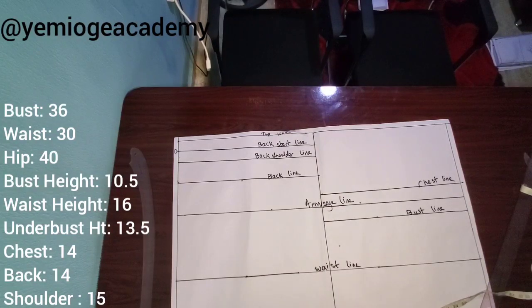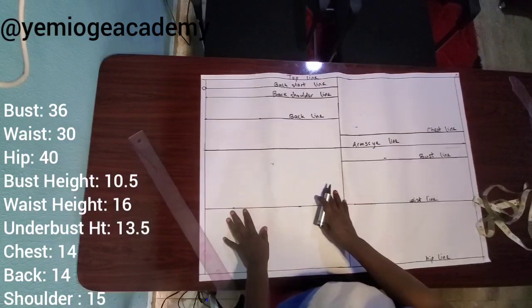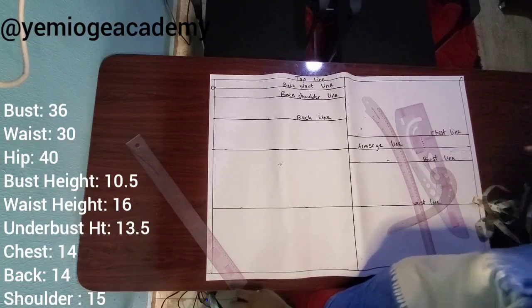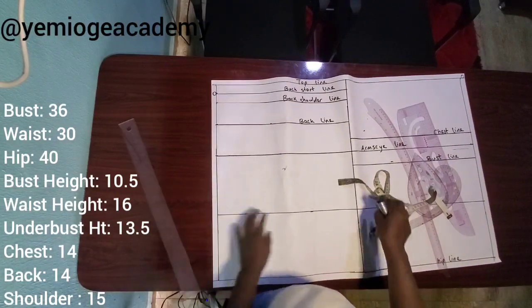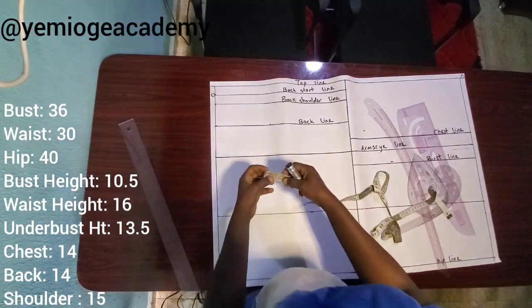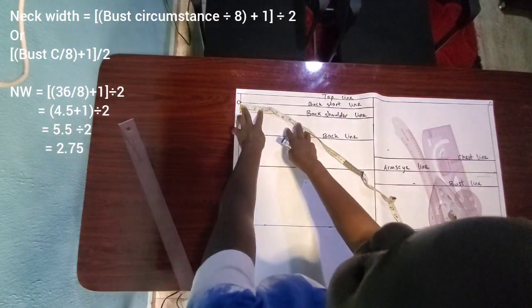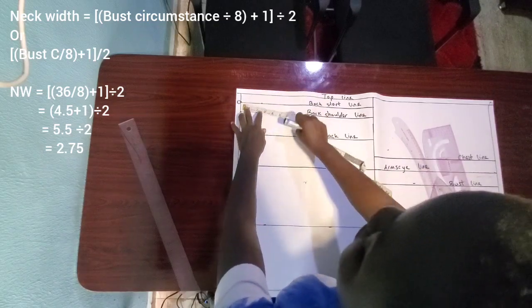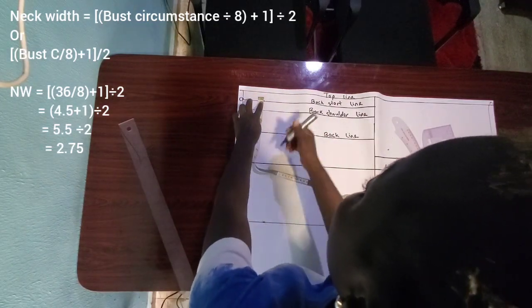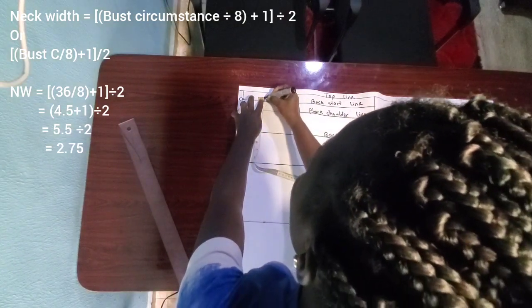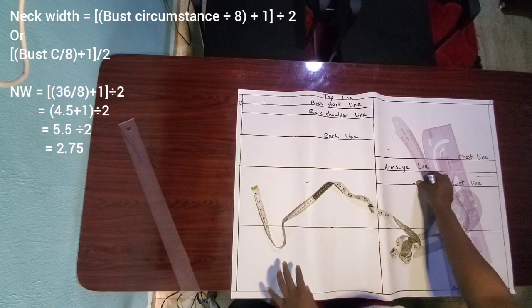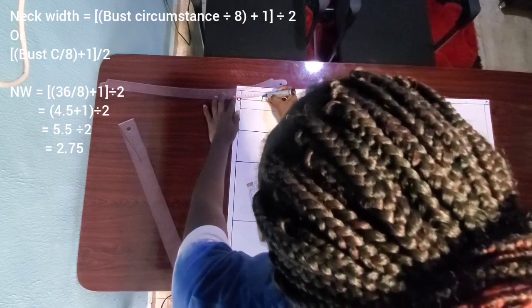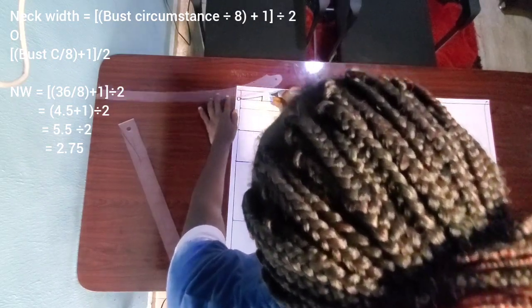Now we have our horizontal lines in place, so we start drawing the vertical lines. I'm going to start from the neckline at the back. The formula for the neck width is shown on the screen. From point O, I measure my neck width — in this case it's 2.75. From that point I measure half an inch up and draw a line. I curve it from that half inch point to point O and label it my neck point.